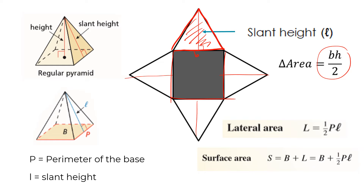To find the area of the square base, you just do length times width. If the base were any other shape, you'd use whatever formula you need — for a triangle it's base times height divided by two, for an octagon you'd use apothem times perimeter divided by two. Whatever the formula is, that's what you use to solve for that base area.